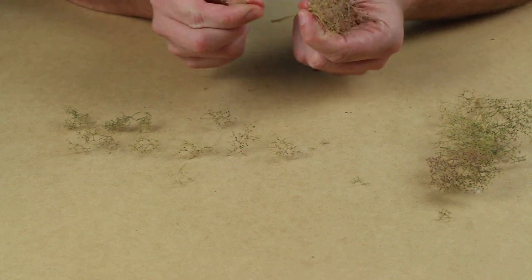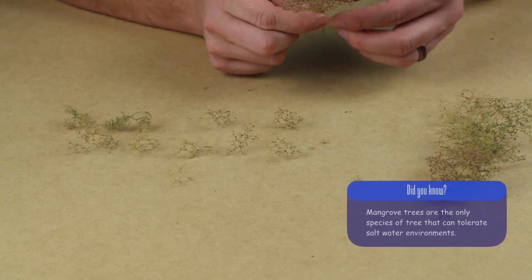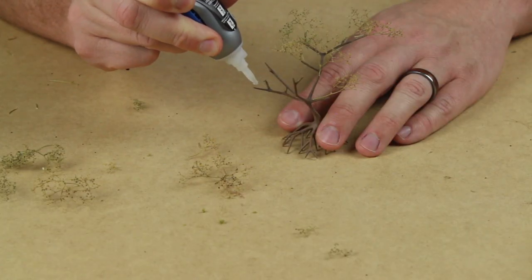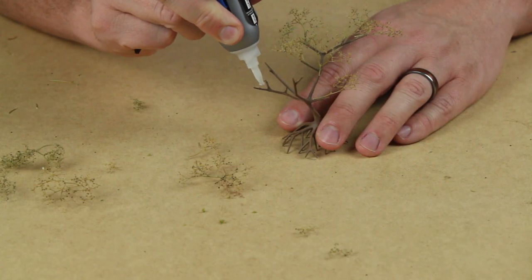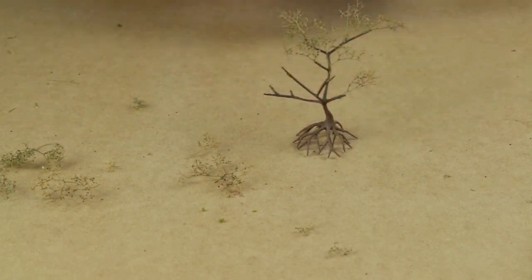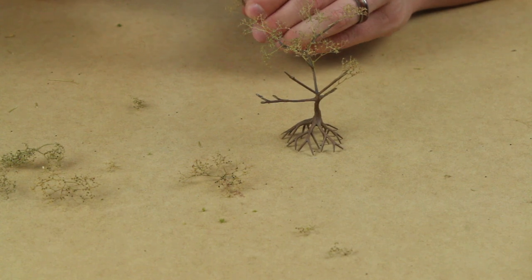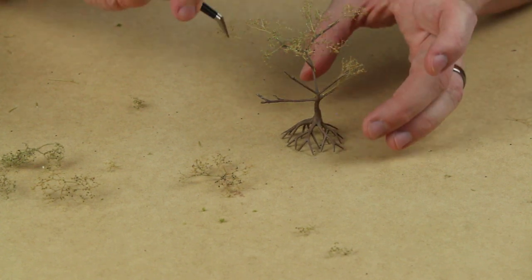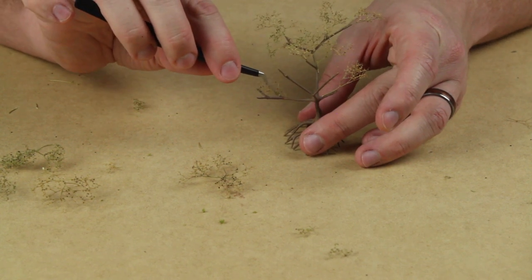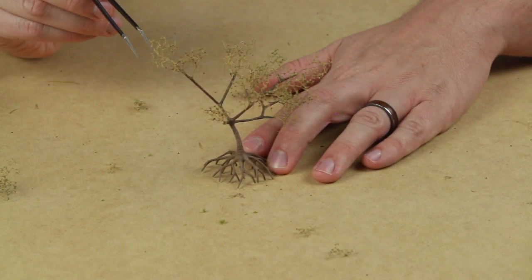The canopy of the tree was created by gluing small sea foam branches to the resin tree. Superglue gel was used to attach the branches to the tree. This step can be a little bit tedious, but some fine tipped tweezers and superglue accelerant can make the process a lot easier. I think you will agree that the end result is definitely worth the hard work.